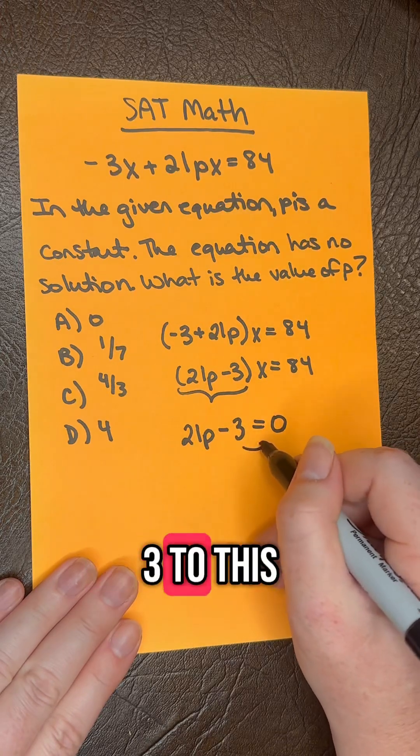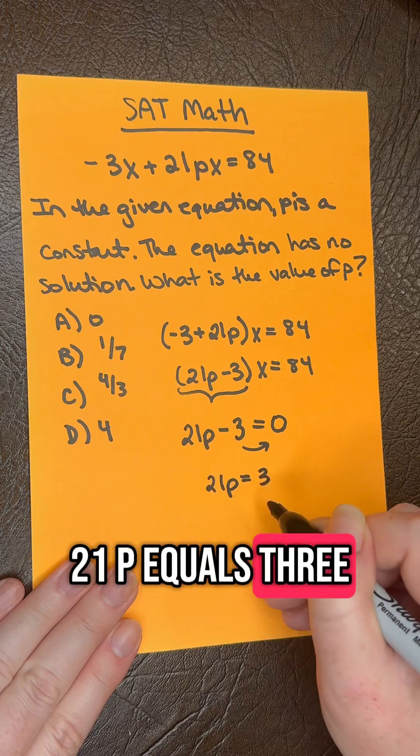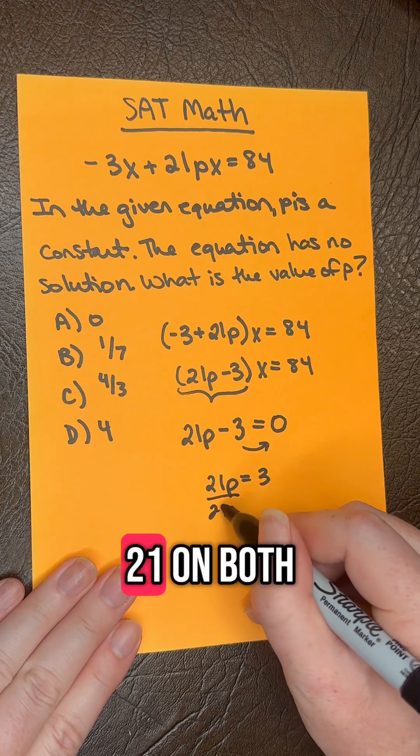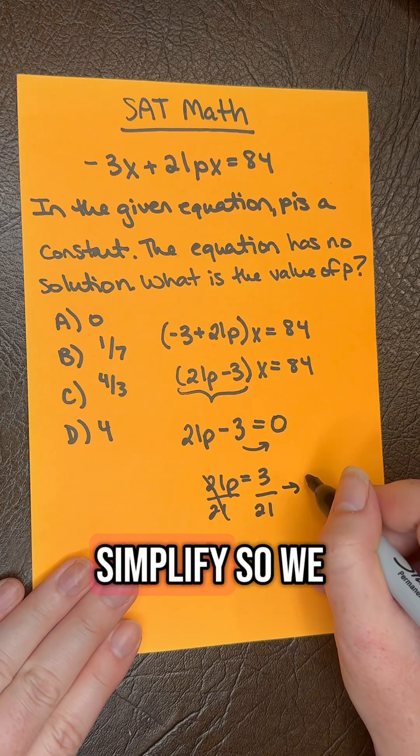we'll move the three to this side of the equation. So we'll get 21P equals three, and then we'll divide out by 21 on both sides of the equation, and then we simplify. So we get